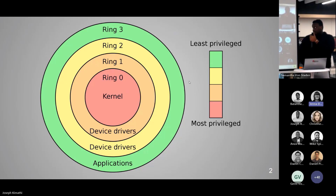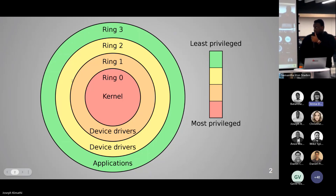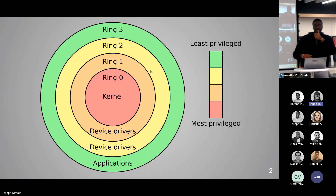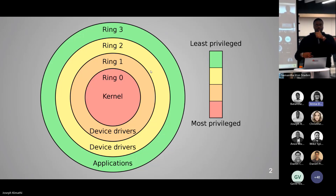Looking at the diagram here, you can see that in the higher rings you have your applications and device drivers, but your kernel-level anti-cheat will actually be running in ring zero. This means the anti-cheat software has access to all of your computer's memory while it is running, and not just the memory of the actual game.